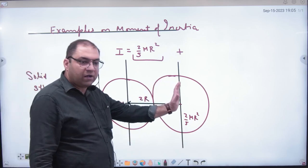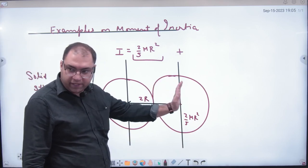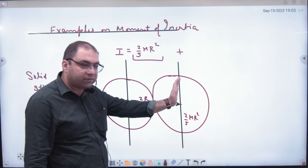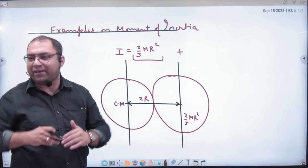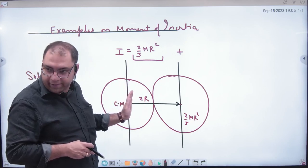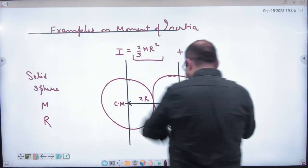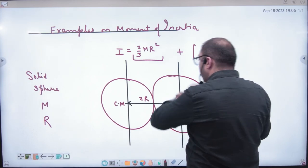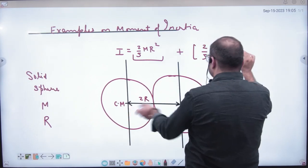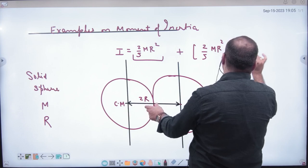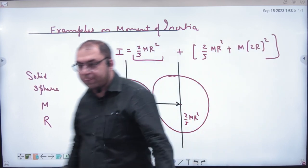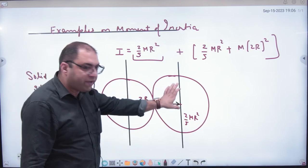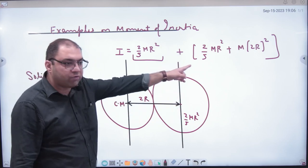So you need to find the moment of inertia of the second sphere about the required axis. The important point: I have to shift the moment of inertia from the sphere's own center axis to this axis. The theorem of parallel axis says: if the moment of inertia about the center axis is 2/5 mr², then the contribution is 2/5 mr² plus m times (2r)².